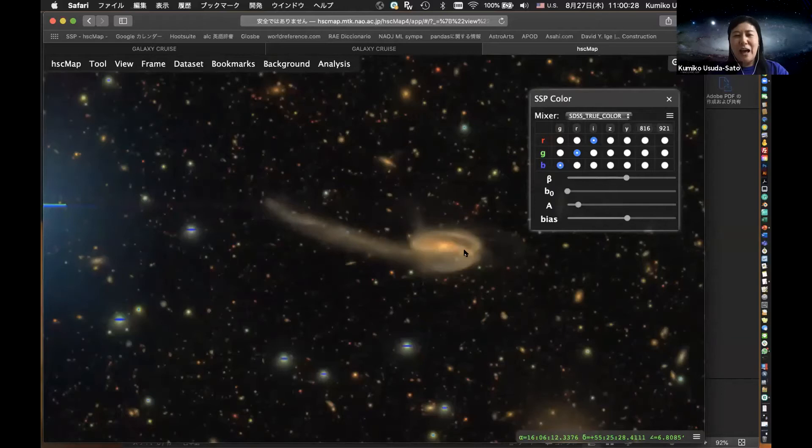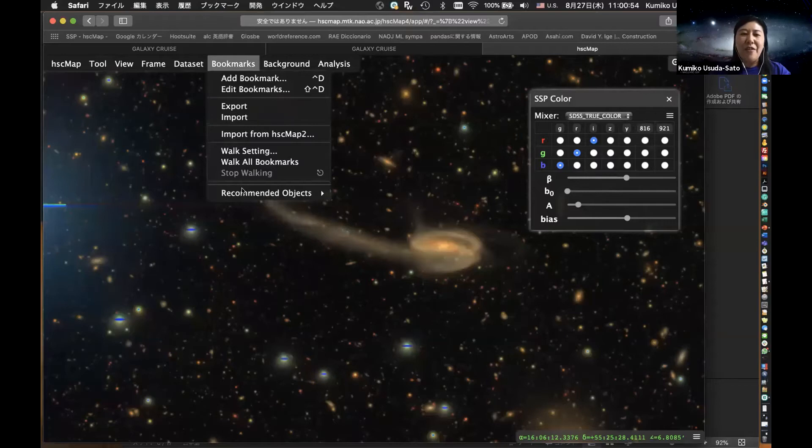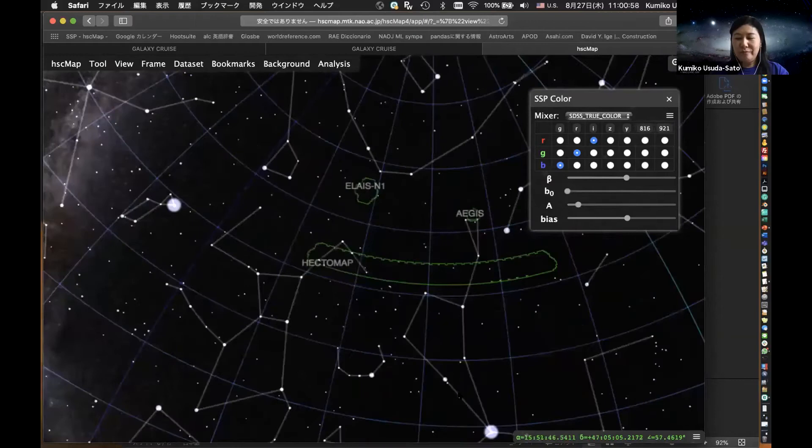In the menu above, under bookmarks, we have some recommended objects. For example, this is the Tadpole Galaxy. Actually, this is a spiral galaxy, but when another galaxy passed by, this galaxy received gravitational interaction, so one of the spiral arms was pulled out. We call this kind of galaxy an interacting galaxy by gravity. Interaction is the main theme of Galaxy Cruise.